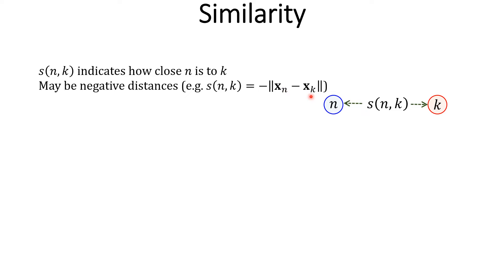x_n and x_k are the coordinates of the two points n and k. The set of all similarities can be stored in this n by n matrix uppercase bold S. And S need not be symmetric.